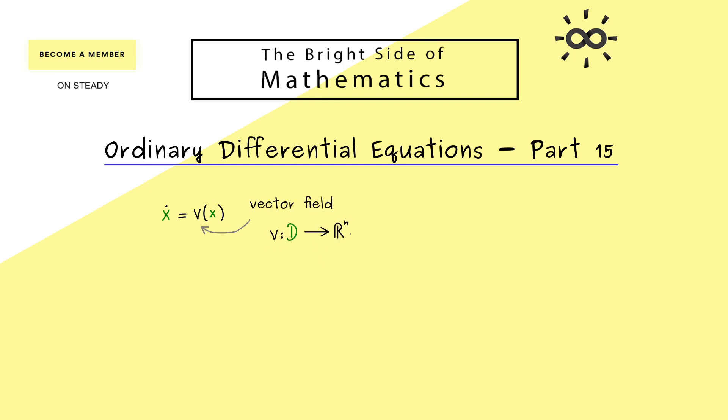And v can be seen as a vector field. It maps Rn into Rn or more generally it's defined on an open subset in Rn. And then please recall, we can visualize that. For example here, if D lies in R2, we have this directional field.